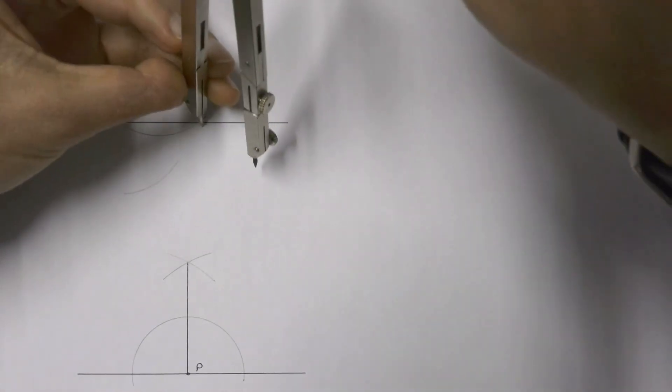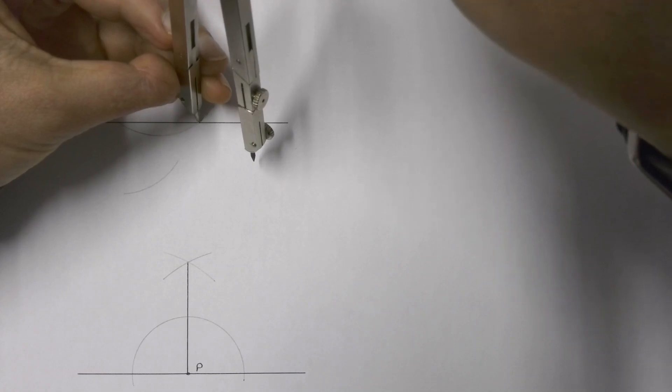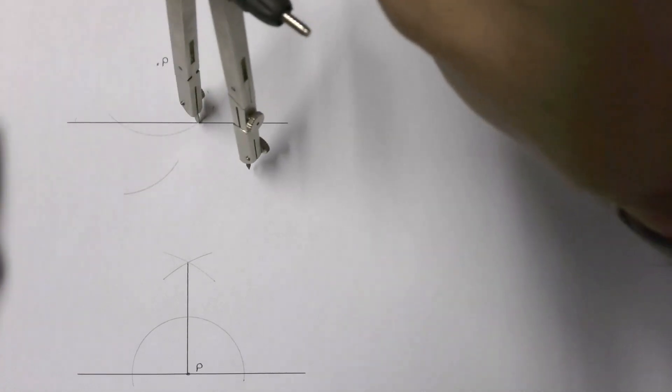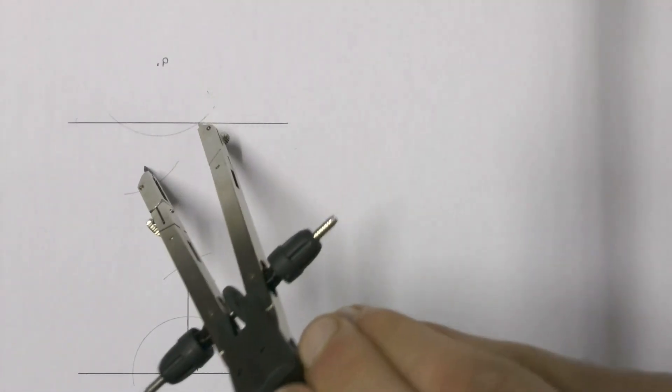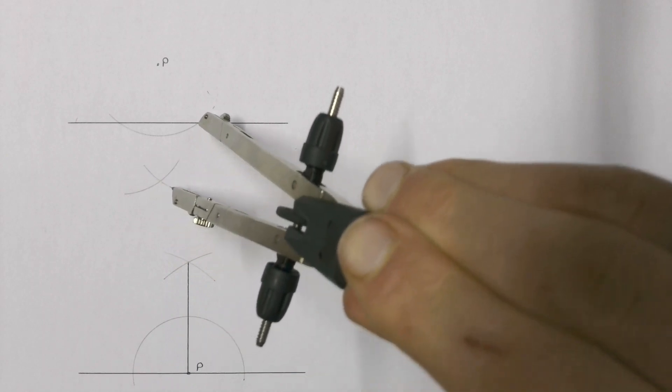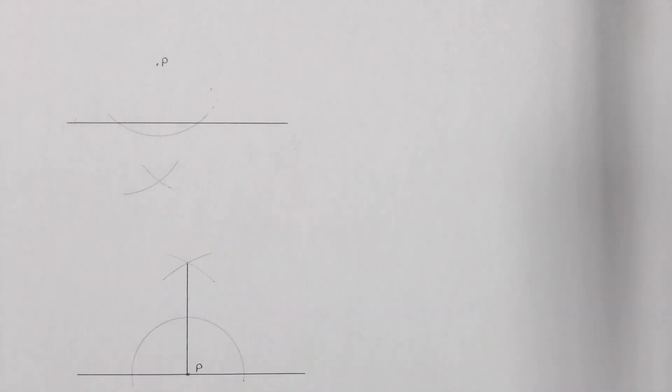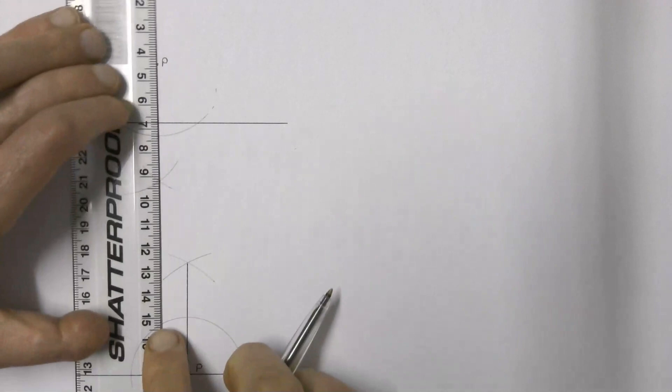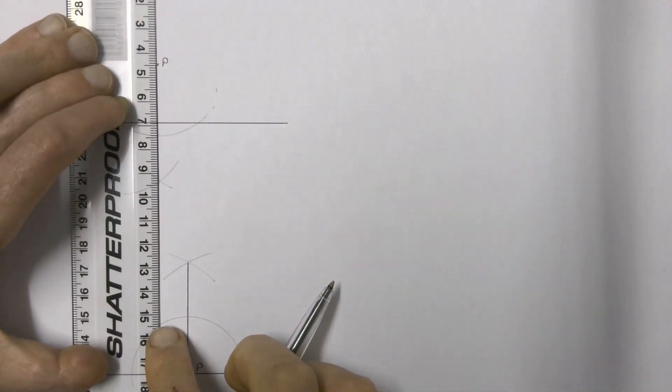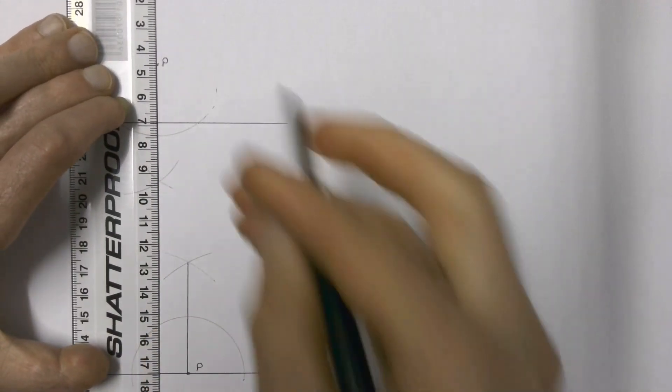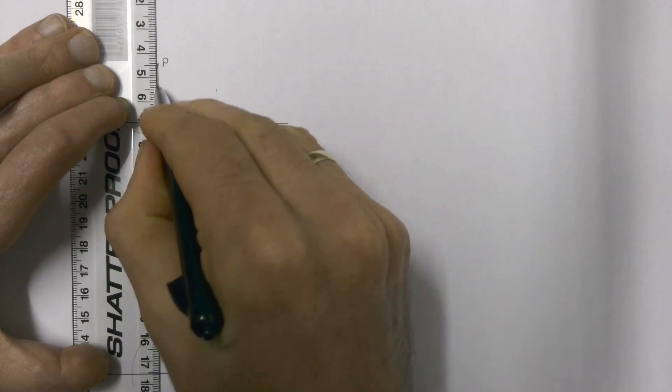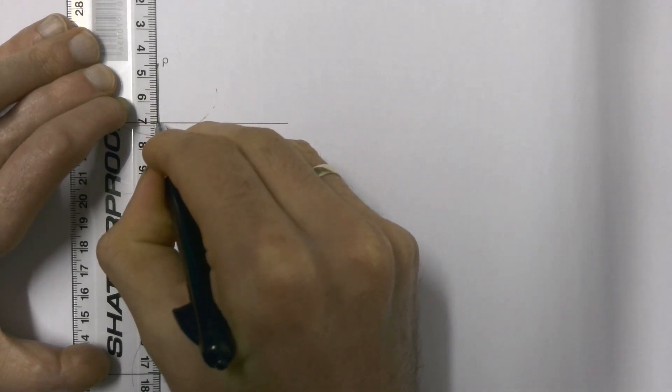Do exactly the same thing on the other side and draw another arc. Make sure the two arcs intersect each other, and then if we line up point P with that arc, we will be able to drop a line from point P perpendicular down onto the line we were given.